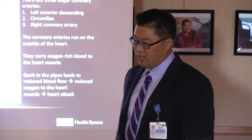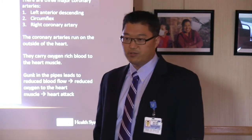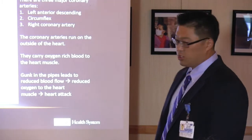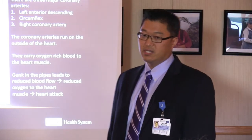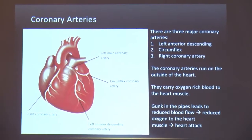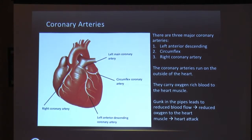The first thing I wanted to talk about is coronary artery disease. There are two main coronary arteries: the left coronary artery and the right coronary artery. They come off on opposite sides of the aorta, right above the aortic valve. The left main artery splits into two — the LAD, the left anterior descending artery, and the circumflex. On the right side, it's the right coronary artery. These vessels run on the outside of the heart.